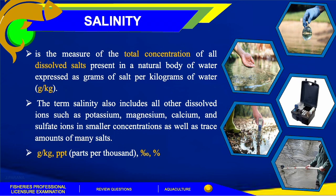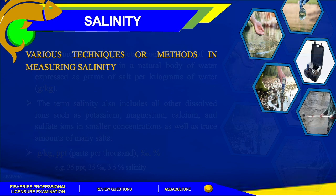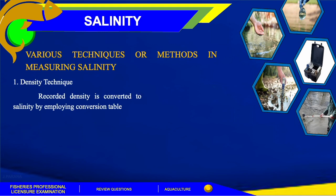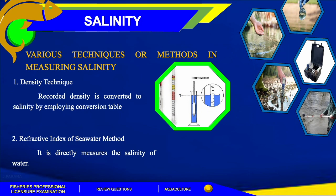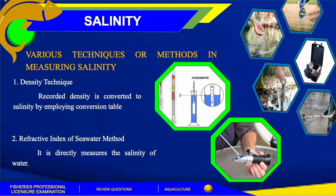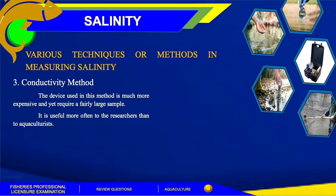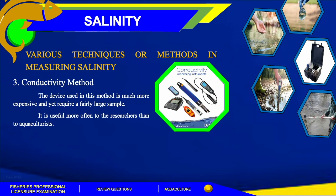There are various techniques for measuring salinity. The first is the density technique, the least expensive method. The instrument used is a hydrometer, and required density is converted to salinity using a conversion table. The second is the refractive index method, the simplest and most rapid. The instrument used is a refractometer, which directly measures salinity. The third is the conductivity method; the device is more expensive and requires a fairly large sample, making it more useful to researchers than aquaculturists.